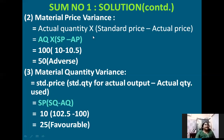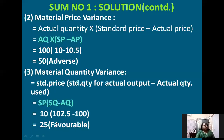The material price variance formula is: actual quantity into (standard price minus actual price), i.e., AQ × (SP − AP). The actual quantity is 100 tons, the standard price is rupees 10, and the actual price is rupees 10.50. So we get 100 × (10 − 10.5) = 100 × (−0.5) = −50, which is 50 adverse. For the material quantity variance, the formula is SP × (SQ − AQ): standard price 10, into standard quantity 102.5 minus actual quantity 100, giving a positive answer of 25 favorable.